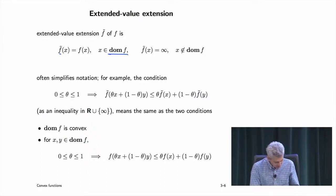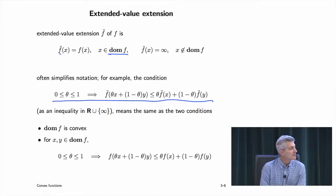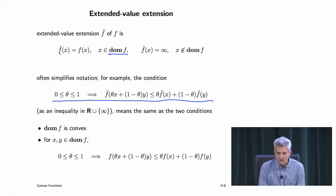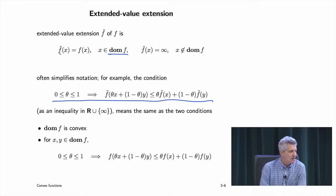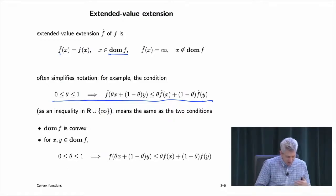The extended value extension allows the convexity inequality to hold now for any x and y. There are a few things not well defined in extended arithmetic — for example, 0 times infinity. But otherwise everything is well defined and works. This is the extended value extension; it will come up many times.